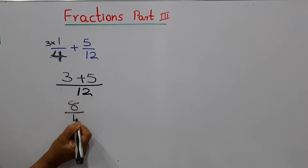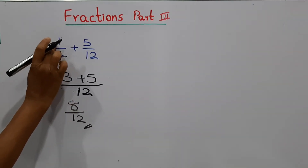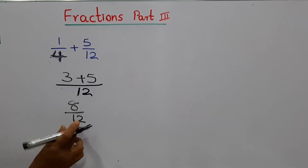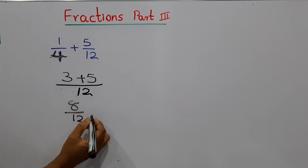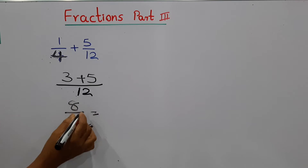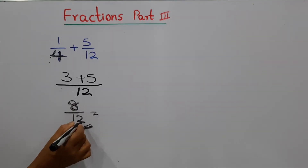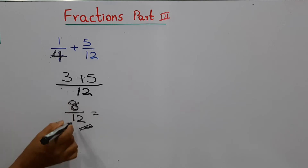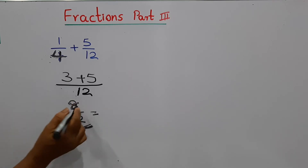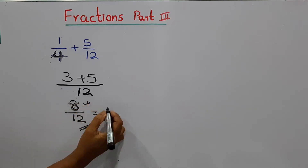We are going to add these numbers together: 3 and 5 gives 8, and the denominator is 12. So the answer is 8/12. Now, can we write equivalent fractions to this fraction? We need to check which number can divide both 8 and 12.